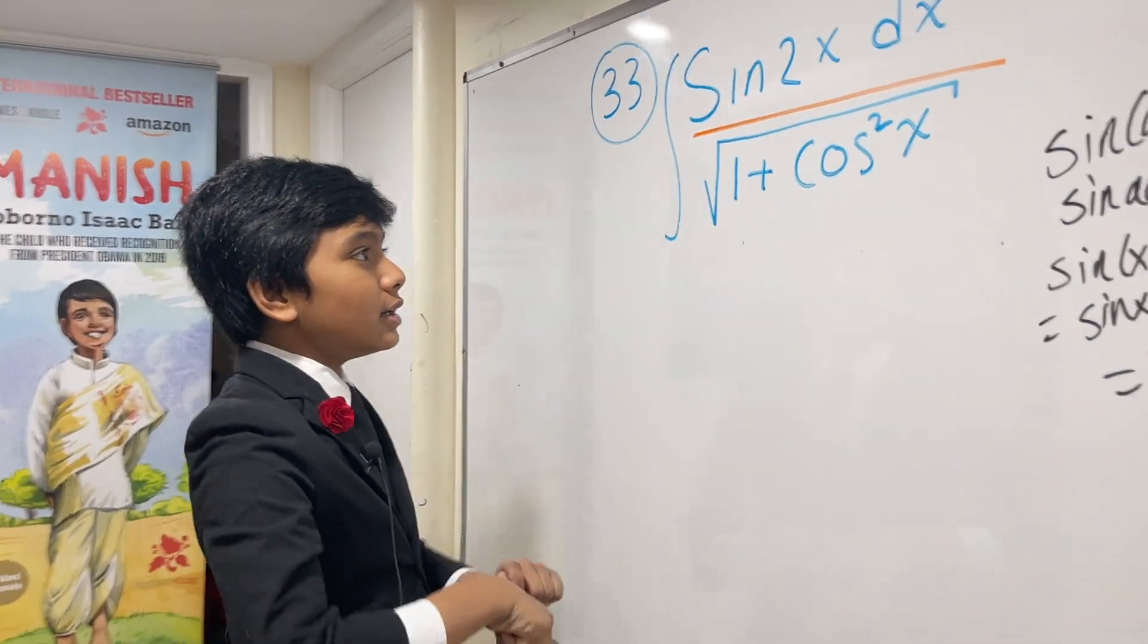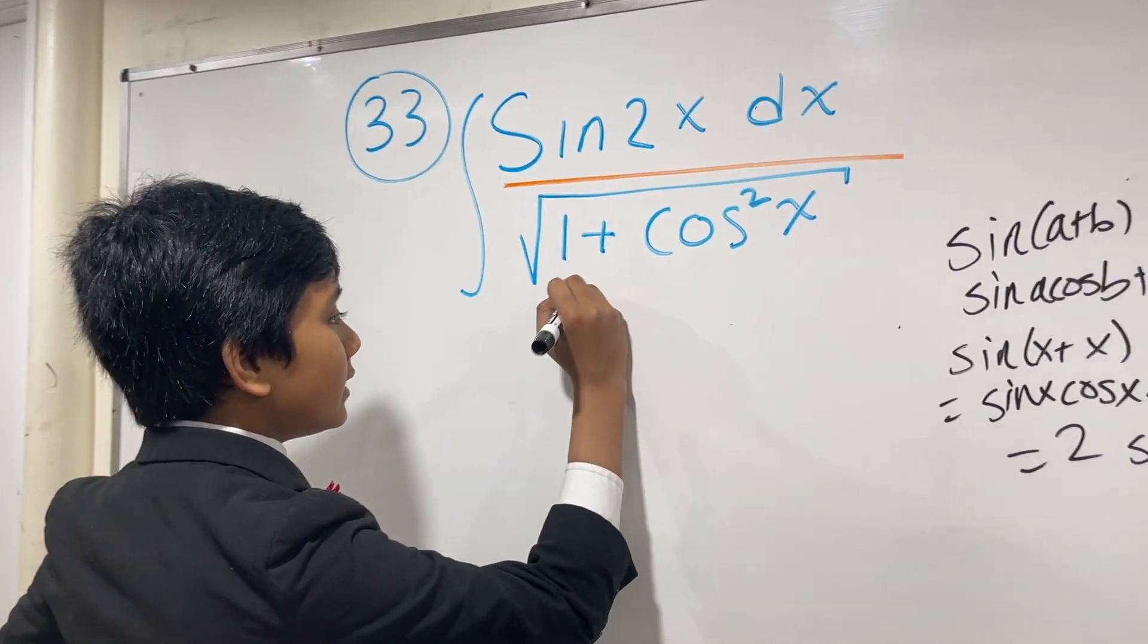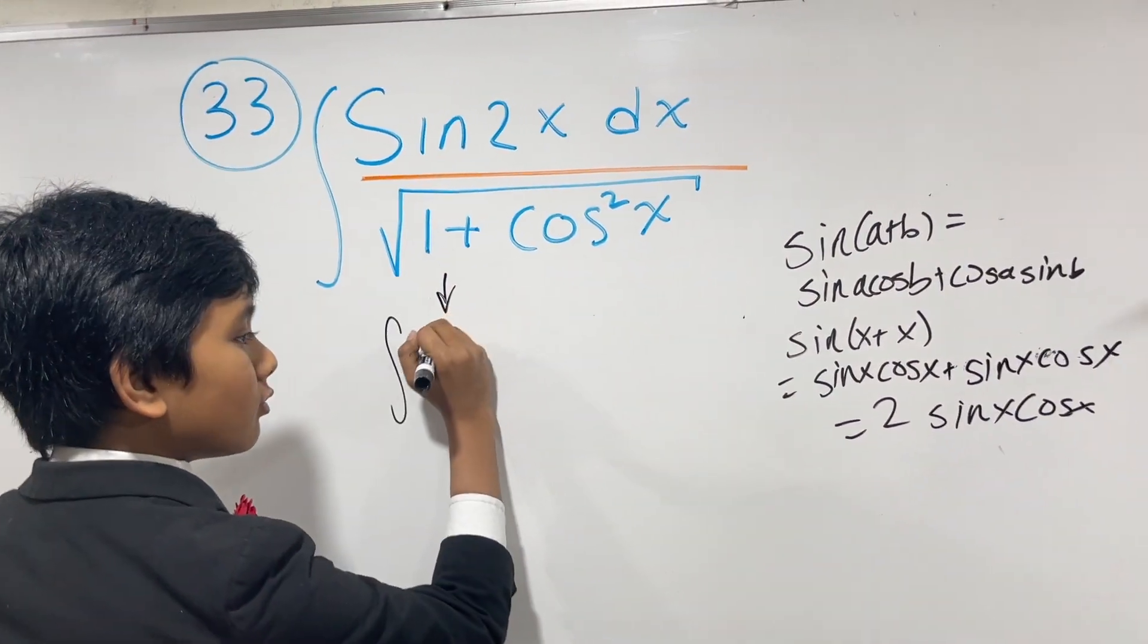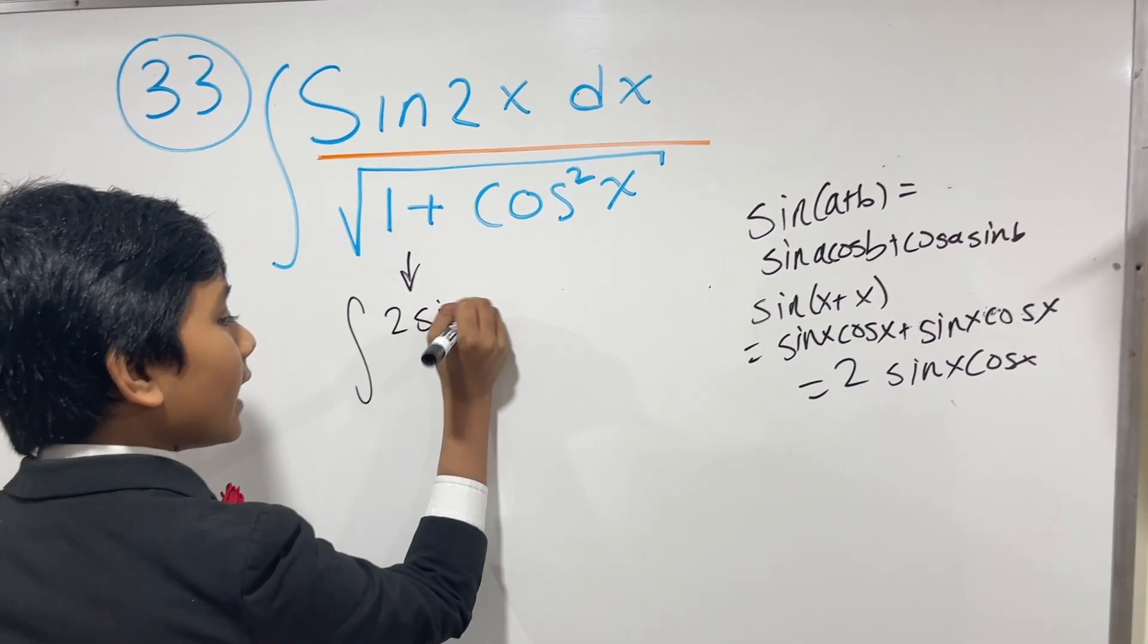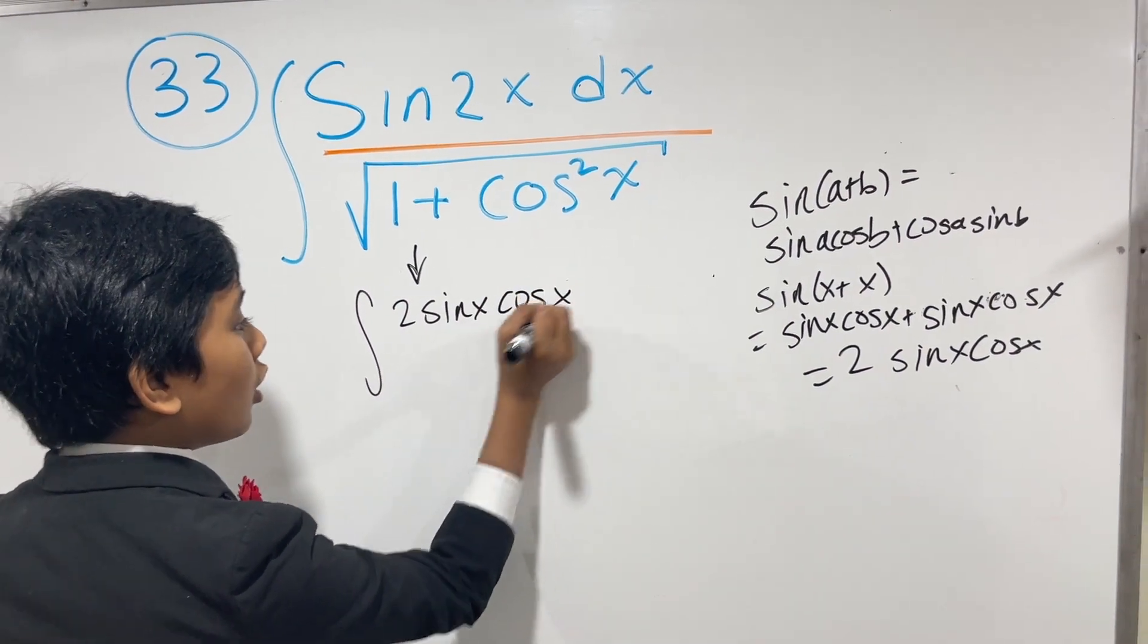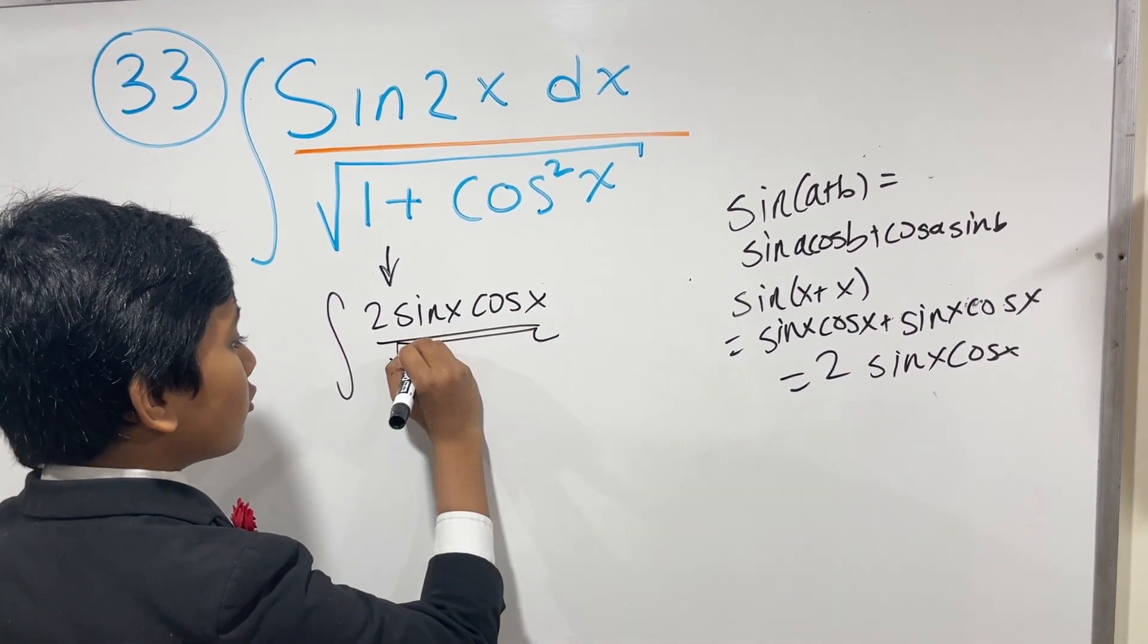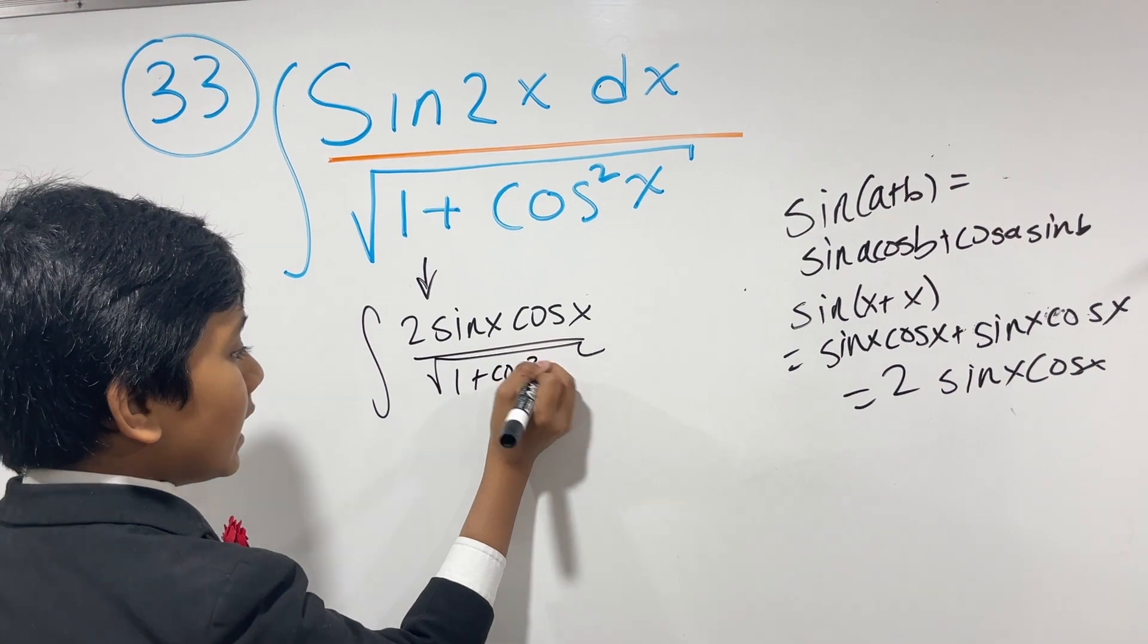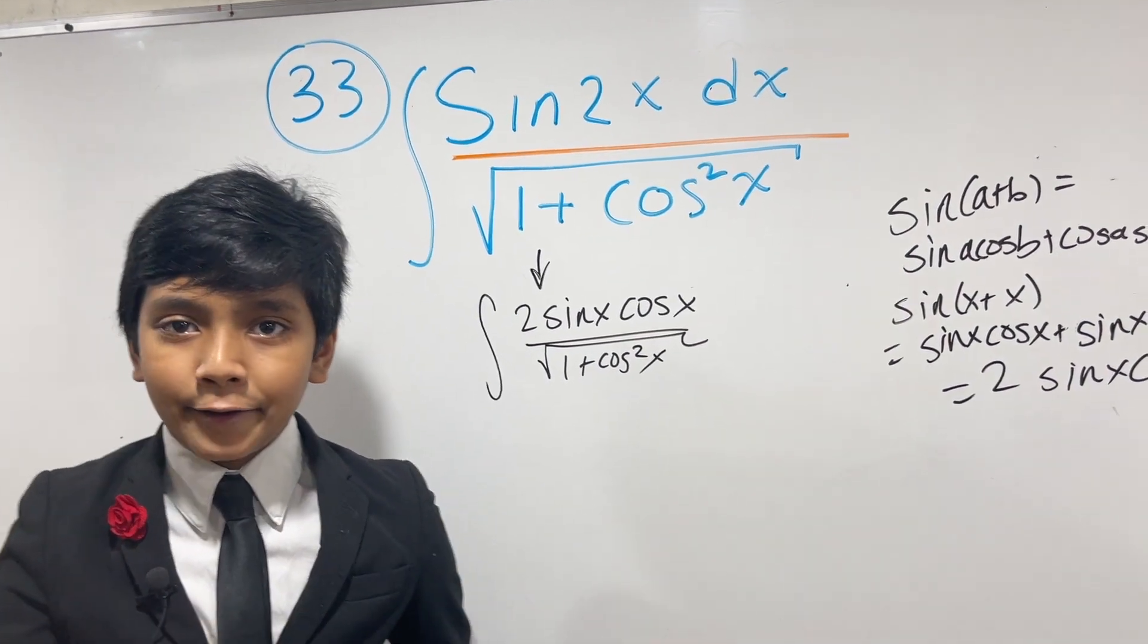So that means that we can rewrite this as the integral of 2 sine x cos x over the square root of 1 plus cos squared x. Now I think we all know what needs to be done now.